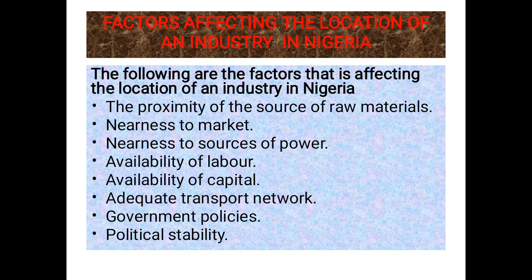Lastly, we'll be talking about the factors that affect the location of an industry in Nigeria. Number one is the proximity to the source of raw materials — the place where raw materials are located matters greatly. The second factor is being nearest to the market. Most industries in Nigeria today are not close to the market, so it is one of the factors affecting the production of an industry.